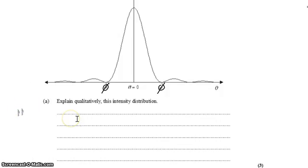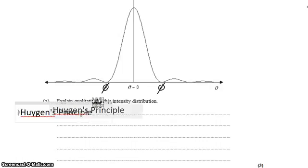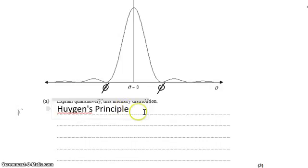So to answer that question, we can say that Huygens' principle tells us that the light from all parts of the slit generate their own waves.